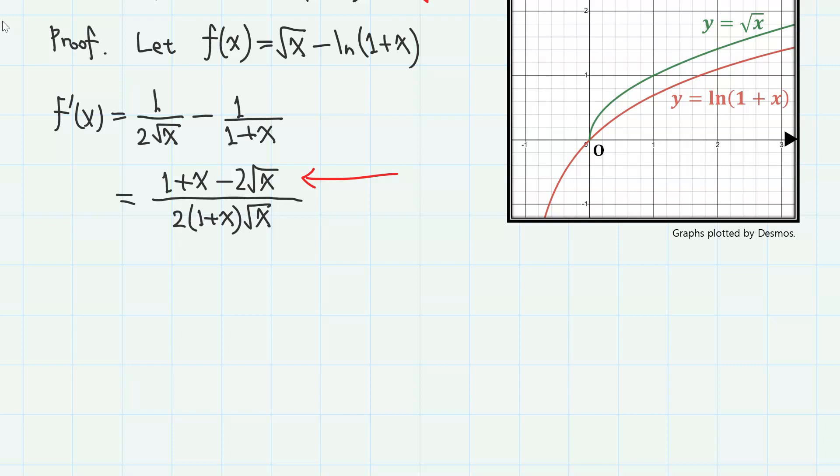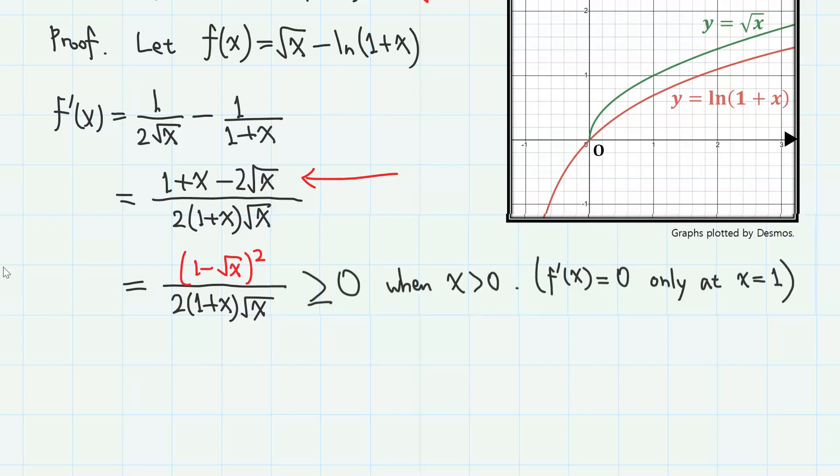And if you look at the numerator right here, you will see that it is just (1 - √x)². Therefore, this derivative is positive or 0 when x is greater than 0, becoming 0 only at a finite number of points, which is x equals 1.